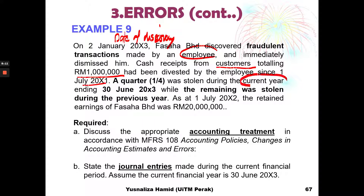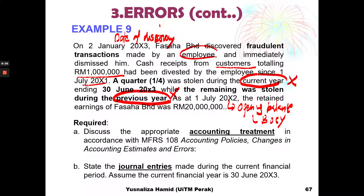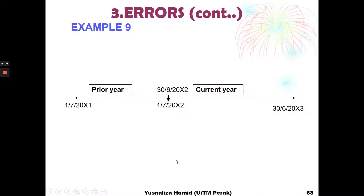So there were two things that happened: one error in the current year and one in the prior year. As at 1st July 2002, retained earnings of Fasaha was 20 million — the opening balance of retained earnings at the beginning of the current year. You are asked to discuss the appropriate accounting treatment in accordance with MFRS 108, and to provide the journal entries for correction of error. The year end is assumed as 30th June 2003.